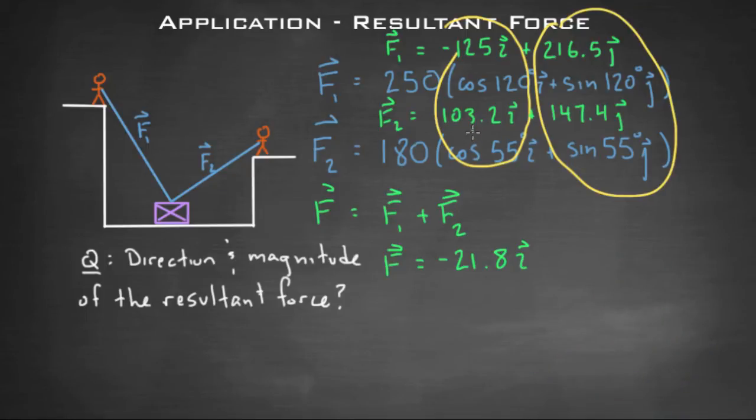And then the J component, you'll have 216.5 J plus 147.4 J, which if my math is right I think that's 363.9 J. Now notice that's larger than either one of those two, again because they're working together in the vertical component sense. They're working together, and the J component of the resultant force is much larger than either of their individual forces.